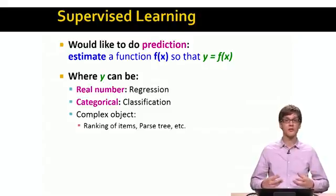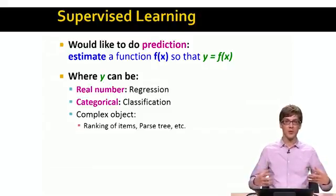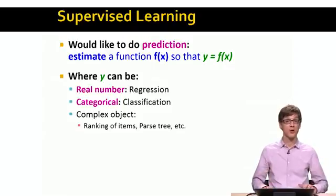Of course, you can also predict kind of more complex objects. For example, y could be a ranking, an ordering of things. Or it could be, for example, if you are working with sentences, y could be a whole parse tree. But what we will focus on in our lecture is mostly on classification. So basically, given a set of x's, decide what is the label, the binary label of every x.